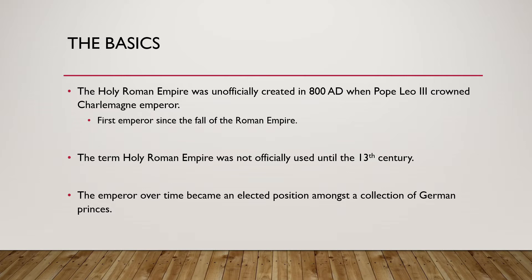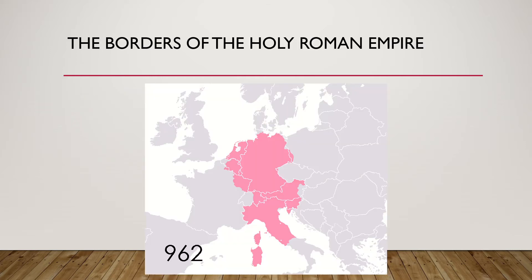The term Holy Roman Empire wasn't actually used until the 13th century. And the emperor over time became kind of an elected position amongst a collection of German princes. So basically, it was kind of like a semi-democratic monarchy — it's a kind of weird government structure.